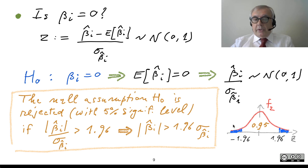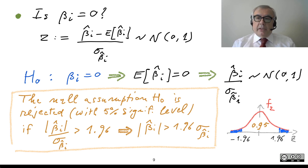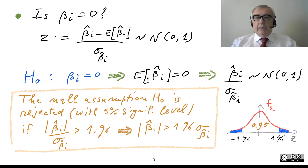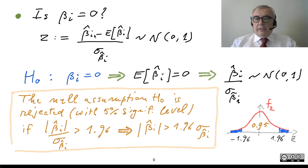We can also answer an important question: is the i-th parameter equal to zero? We can answer this by exploiting the normality of the parameters. In particular, we can perform a standardization of the i-th estimated parameter: we take the random variable minus its expectation divided by its standard deviation.